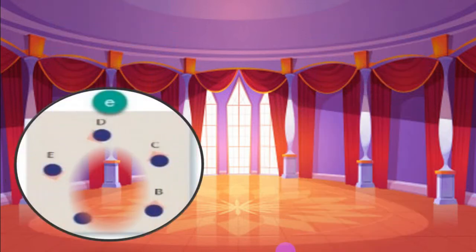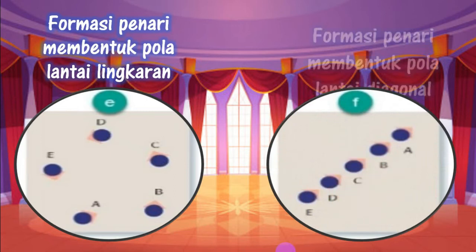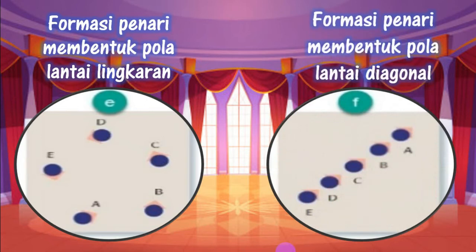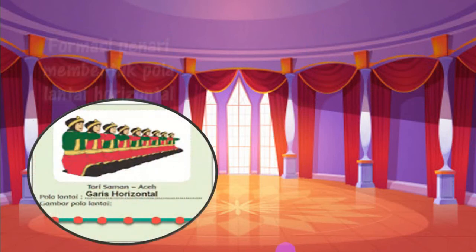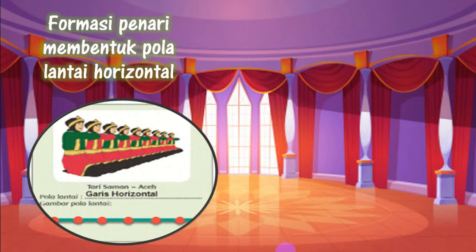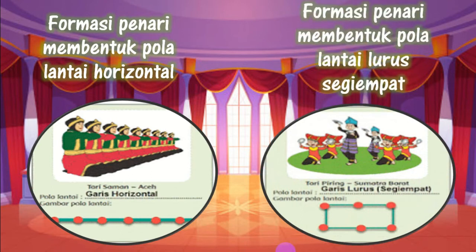Yang kelima, formasi penari membentuk pola lantai lingkaran. Yang keenam, formasi penari membentuk pola lantai diagonal, namun menyudutnya berbeda atau berlainan arah. Yang ketujuh, formasi penari membentuk pola lantai horizontal — ini bisa kita lihat pada tari saman dari Aceh. Kemudian ada formasi penari membentuk pola lantai lurus segi empat, yang dapat kita temukan pada tari piring dari Sumatera Barat.